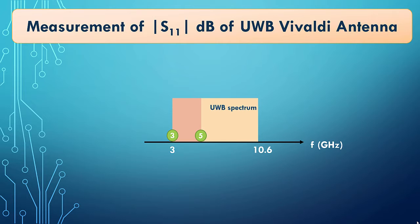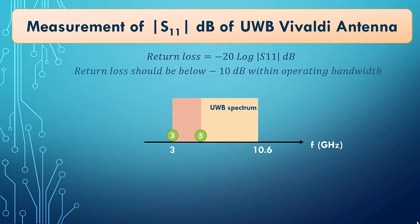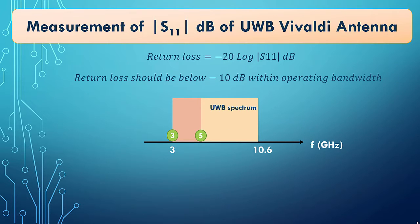What I'm going to measure is the return loss of Vivaldi antenna. And it is defined by this equation. In practice, a good system or a good antenna should have less than minus 10 dB return loss within the operating bandwidth.